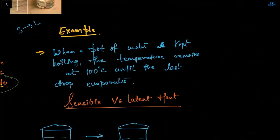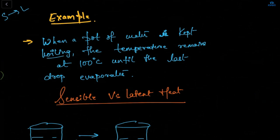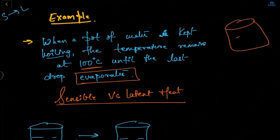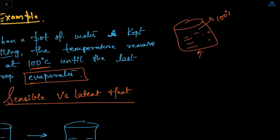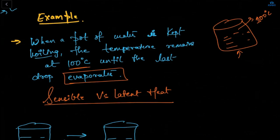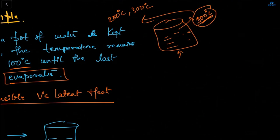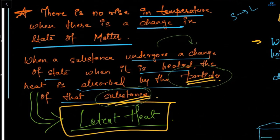For example, when a pot of water is kept boiling, the temperature remains at 100 degrees Celsius until the last drop evaporates. If I have a beaker of water and I heat it, the temperature stays at 100 degrees Celsius and will not increase to 200 or 300 degrees Celsius. This type of heat — absorbed by particles without increasing the temperature — is known as latent heat.